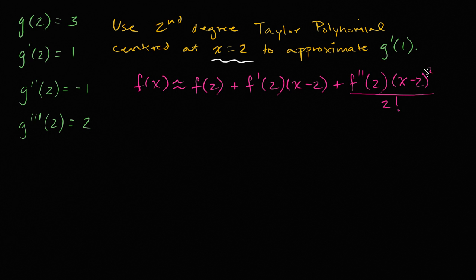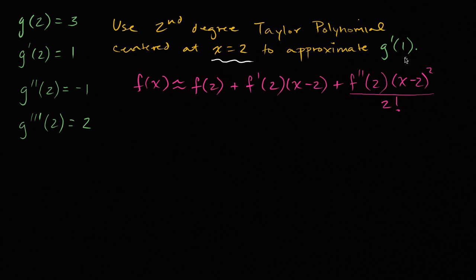all of that over two factorial. That gives us a second degree polynomial because of the x minus two squared term. This is the general case for an approximation of f centered at x equals two, but we're going to do it for g prime.